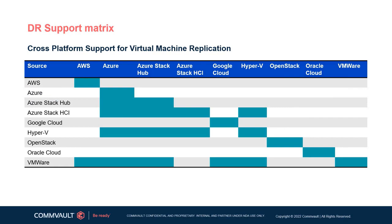Here is the support matrix. The leftmost column is the source site or platform and the top row is the destination. The teal cells indicate where full DR orchestration options are available, with support continuing to expand regularly. Replication for virtualization is currently our most featured DR product, but we do support replication of databases, file systems, and storage as well, with efforts to level out that feature set across other workloads. Support for these features is available on our publicly available documentation portal.